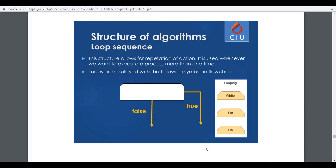Loops are displayed with a specific symbol in the flowchart. The symbol we use here is from the IBM template, and just like a control structure, it goes to either a true or a false branch. This means that in a loop structure you can use one of the logical statements mentioned before in the control statement part.